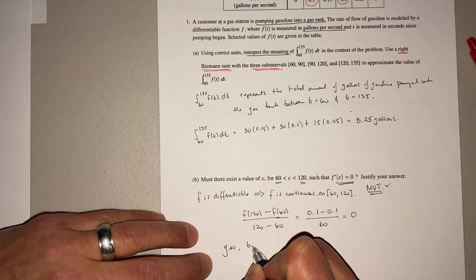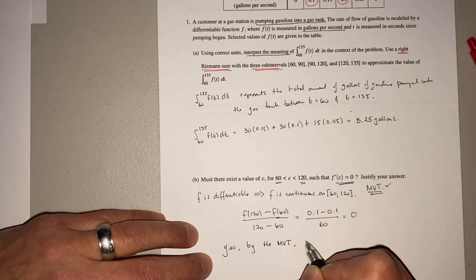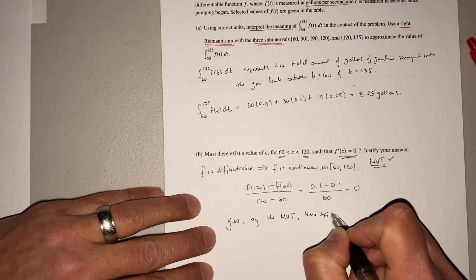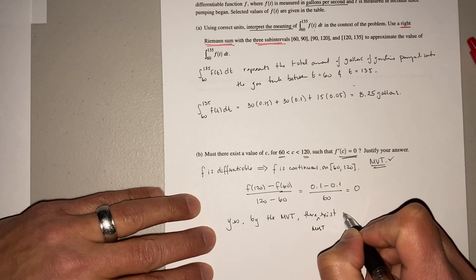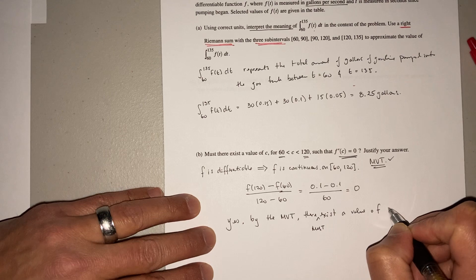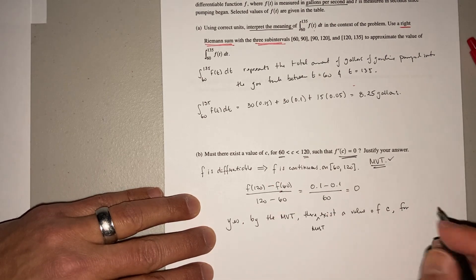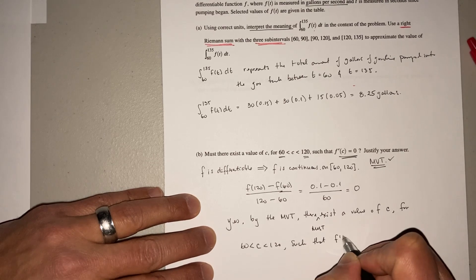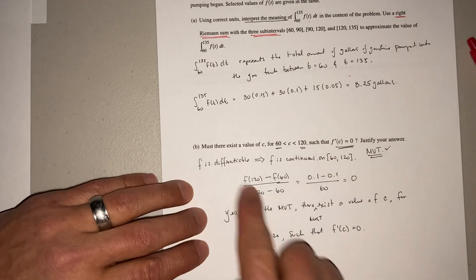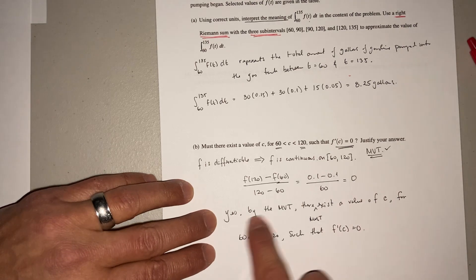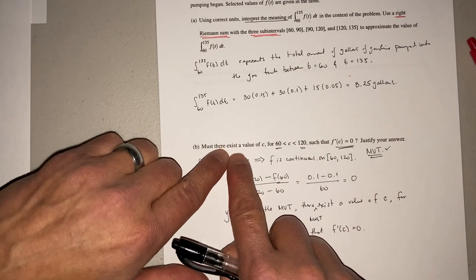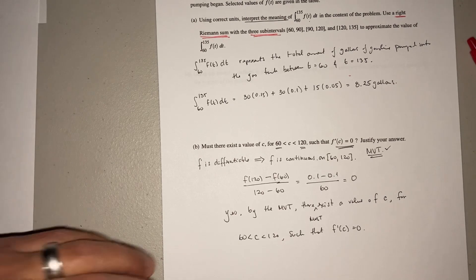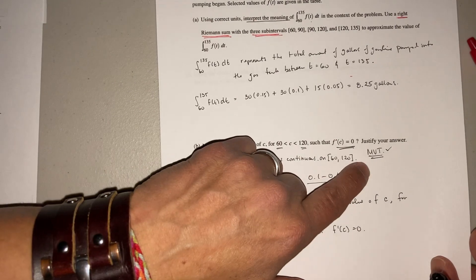Yes, by the mean value theorem. And then you just rewrite this. There exists a value of C. Or you can say there must exist a value of C for this interval. We'll write it over here. Such that F prime of C is equal to zero. And you see, what did I do? I just use this same verbiage. Once you get this, you say yes, by the mean value theorem. And you just go ahead, there exists a value of C, such that, boom, and you're done. And I think that question is worth two points. And that's it, guys. That's it. So make sure you know the mean value theorem.